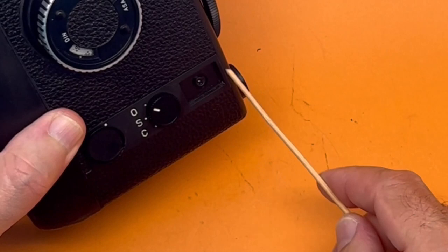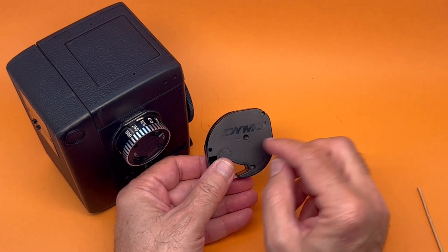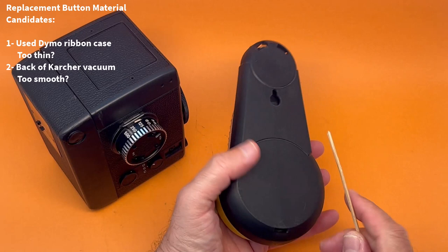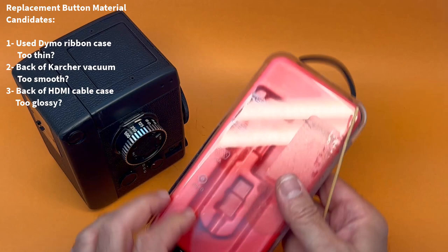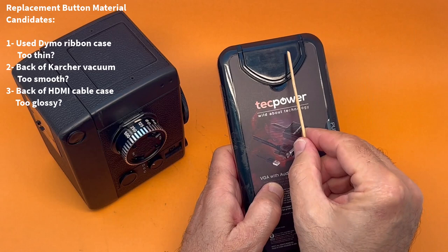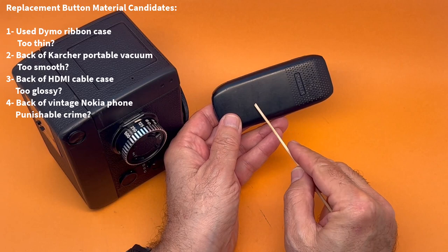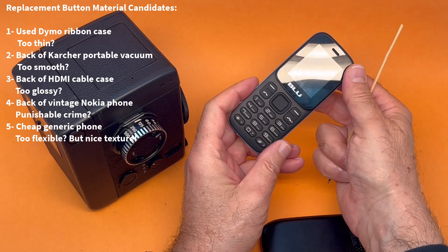Now to fix that missing button, we need some donor plastic. Let's look at the candidates for some donor plastic. How about this one? A Dymo ribbon case. Maybe it's too thin. How about this one? It's a Karcher vacuum, the hand vacuum plastic. Too small maybe. This is the back of an HDMI cable case. Nice and thick, but maybe it's a bit too glossy. How about this one? The back of a Nokia phone. Dead for some years. Nice finish, satin finish. A little bit thin, right? This is a generic GP battery case. It has a nice texture which matches the leatherette, but also possibly a bit too thin. The texture is very nice though.